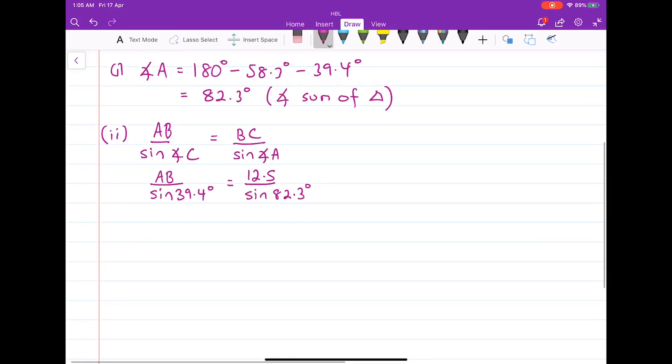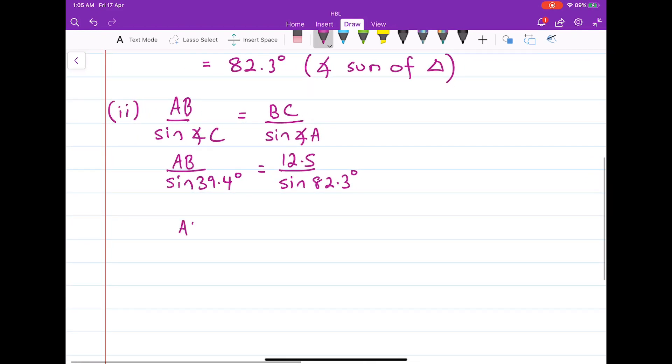AB over sine of 39.4 degrees equals BC which is 12.5 over the sine of 82.3. And then we move things around using algebra. So this becomes 12.5, let's move this sine upstairs. Let's put degree symbols here. And you will get this as approximately equal to 8.0063 which you round off to 3SF. In this case here it is 8.01 centimeters. So that should be the length of AB.